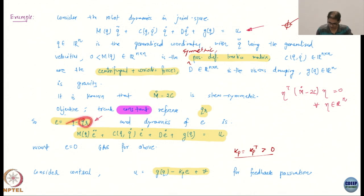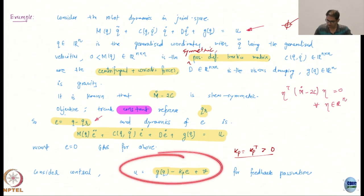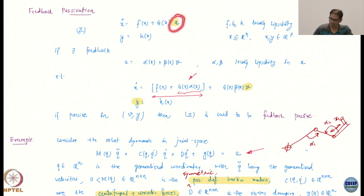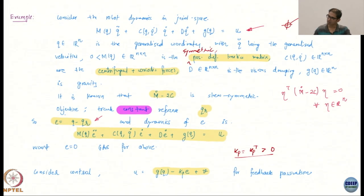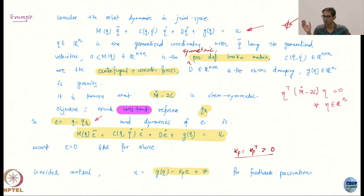So Q_R is the constant reference; you construct an error and get the error dynamics. We want E equal to zero to be globally asymptotically stable. For some K_p equal to K_p transpose positive, we consider this control law for feedback passivation. What were we doing in feedback passivation? We were specifying the control so that the resulting system becomes feedback passive in the new control.